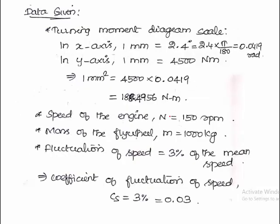These are all the given data. In x-axis 1 millimeter equals 2.4 degrees. To substitute in the analytical formula in SI units, 2.4 degrees is 0.0419 radian. In y-axis 1 millimeter is 4500 Newton meter. So each 1 millimeter square area of the turning moment diagram represents 188.4956 Newton meter. Speed, mass of the flywheel, and fluctuation of speed values are given.